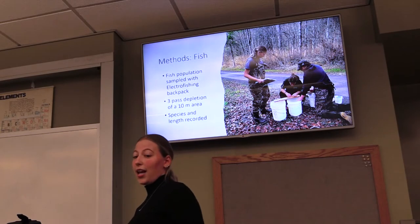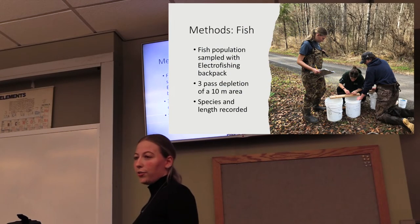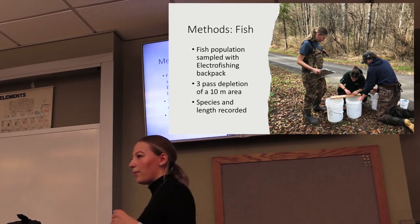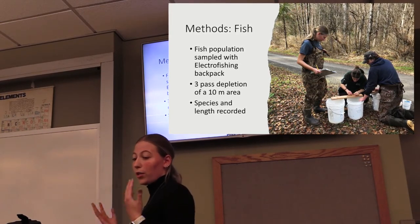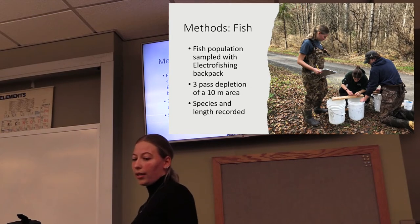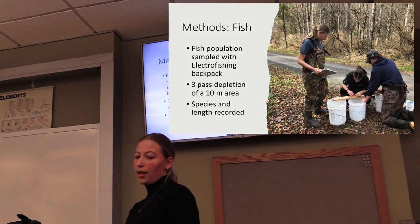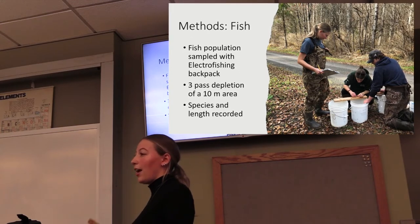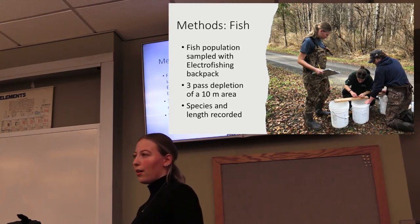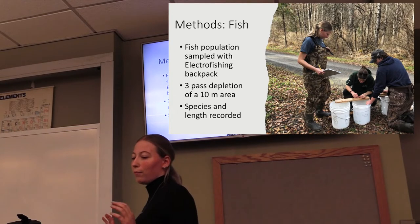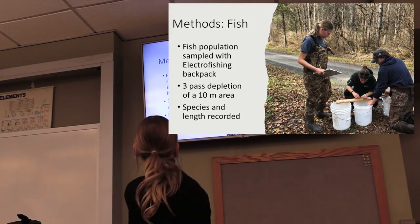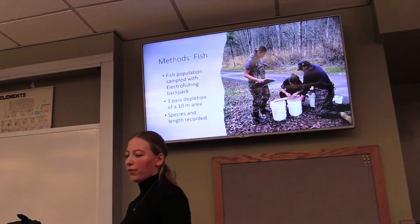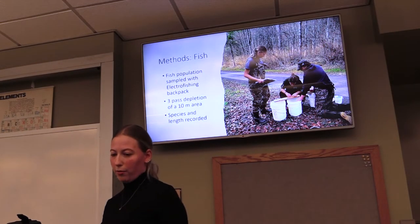The next section is fish. We sampled the fish using our electrofishing backpack unit shown here. It's a backpack — you put it in the water and it stuns the fish, which makes them float up so we can collect them. We used a three-pass depletion method over a 10-meter area, going over the same area three times to get the best representation of the fish population. Here in this picture we are measuring the fish we found, recording the length and species of each fish at each site for each of the three passes.